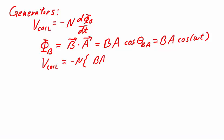B and A are constants. The derivative of cosine is sine with of course a negative and the derivative of the interior by the chain rule is omega. This result can be written in its easiest to remember form as omega n b a times the sine of omega t.